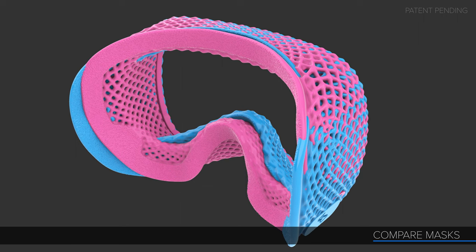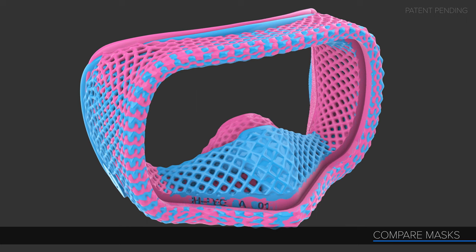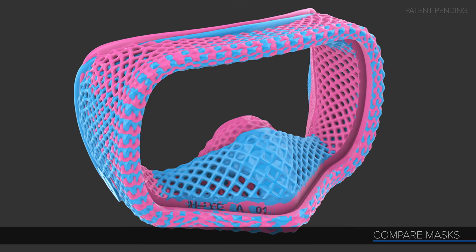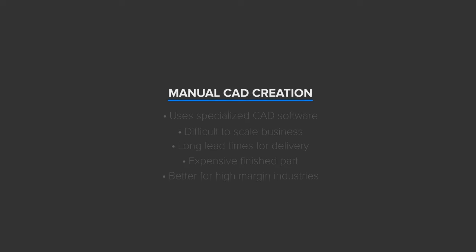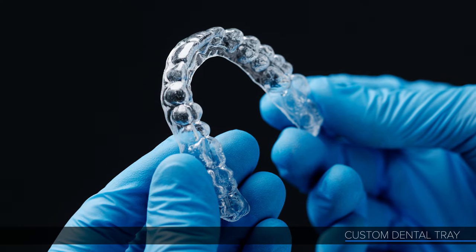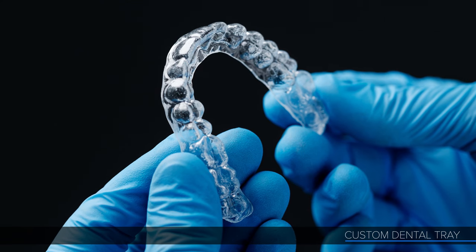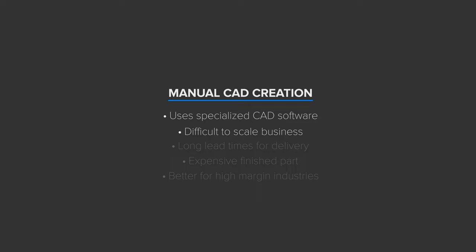I wanted to take a step back and talk about the business implications of systems like this and why visual programming has the potential to change the future of automated mass-produced products. While there are some companies exploring custom product offerings, they tend to focus on two methods. The first is through manual creation of custom 3D geometry for printing. The dental industry uses this technique extensively where scan data of a mouth is brought in and a dedicated technician works with special software to create custom teeth trays, for example. The problem is that it is difficult to scale a business like this up because the finished product requires specialized manual input of a technician to create each part, keeping prices high.